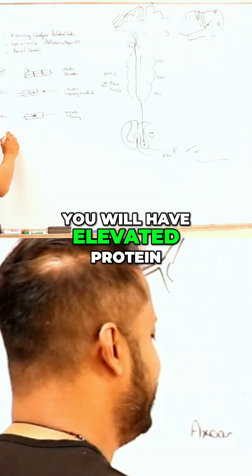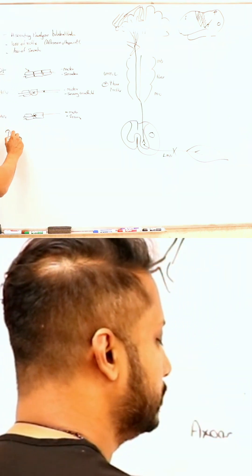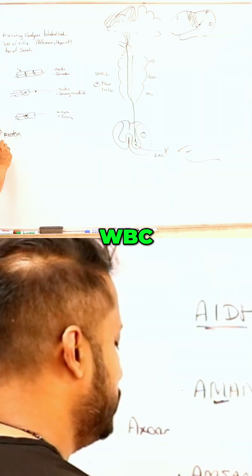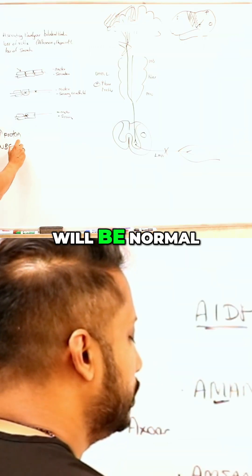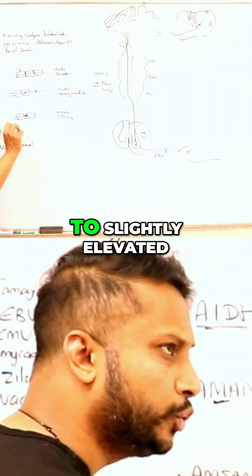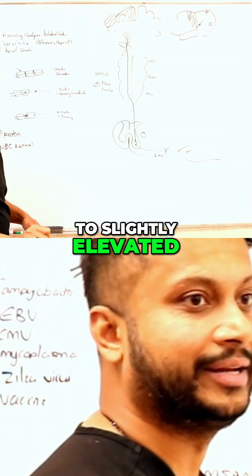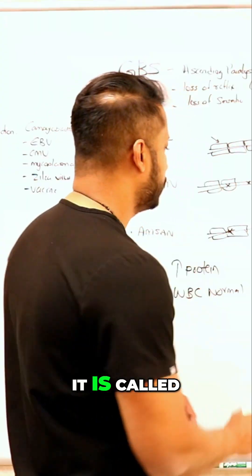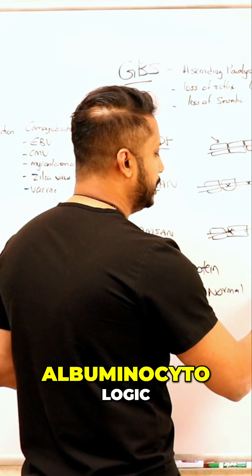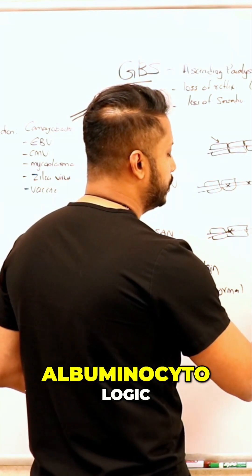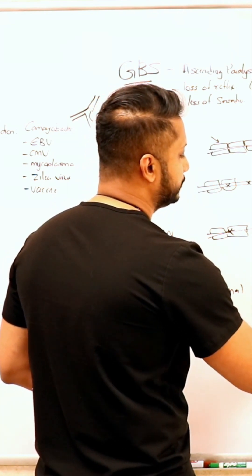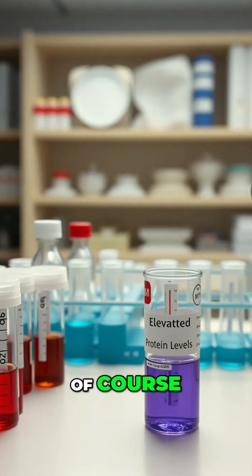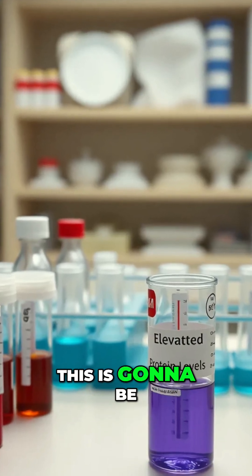Everybody loves to say let's get an LP on the patient with GBS, but what are you looking for? You will have elevated protein, but what would happen to WBC? WBC will be normal or slightly elevated — it could be slightly elevated, but not significantly elevated. This is called albuminocytologic dissociation.